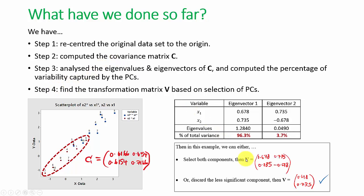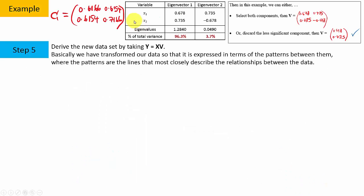At step 4, we wrote out two possible transformation matrices V based on our decision to retain or discard the principal components. If we choose to retain both principal components, then the transformation matrix V is made of PC1's eigenvector 1 in the first column and PC2's eigenvector 2 in the second column. If we choose to discard PC2 because the amount of variance captured is very small and retain PC1, then the transformation matrix V is a single column of eigenvector 1.